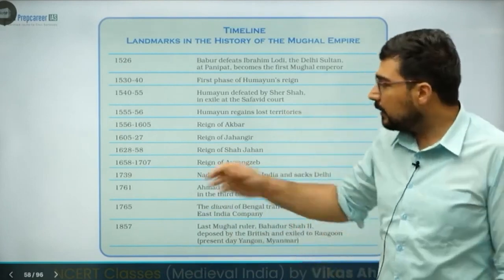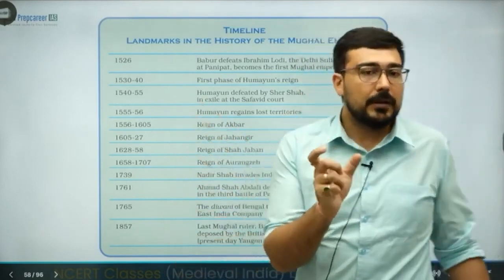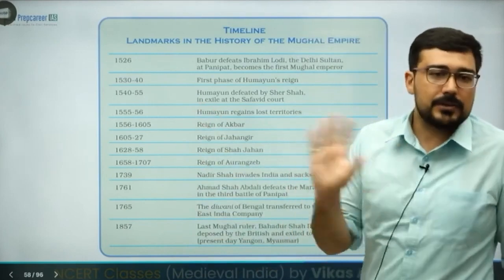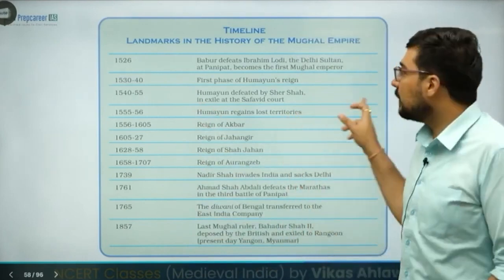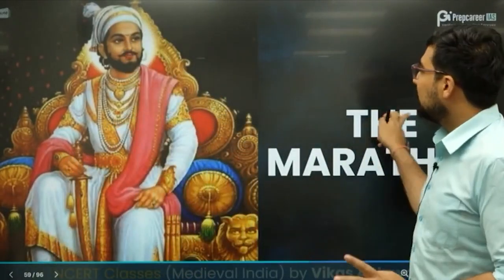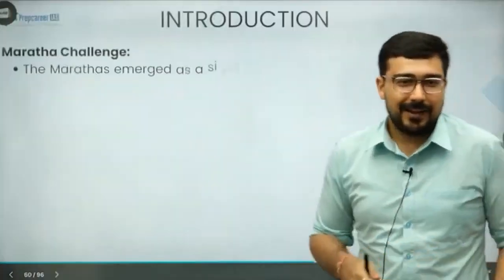That is why we call the later Mughals as titular kings — they were kings only in name. One of the infamous persons among them is Muhammad Shah Rangila, who was known for his love of dance. Just as Kaiqubad was known for music, our Rangila was known for dancing.